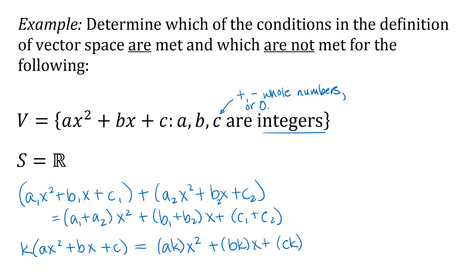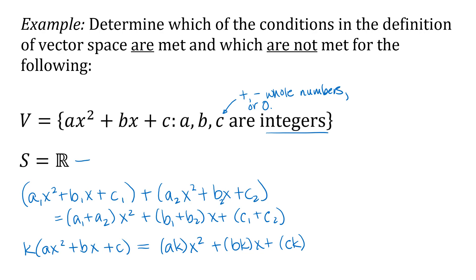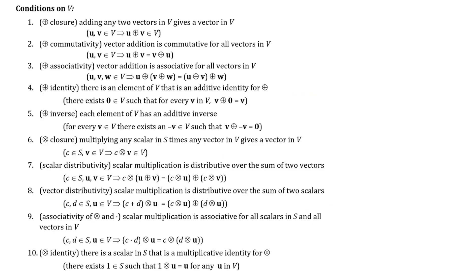We want to think through all of the conditions in the definition of a vector space. Since our set of scalars is the set of all real numbers, all conditions on the scalars will hold and you don't need to check those. If you have the set of complex numbers or all real numbers for your scalars, those conditions will hold. What we need to check are the conditions on the vector space, the set V.